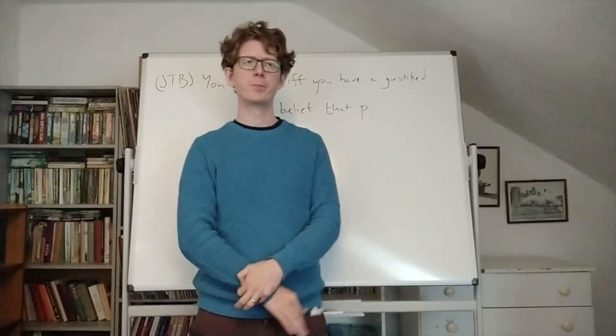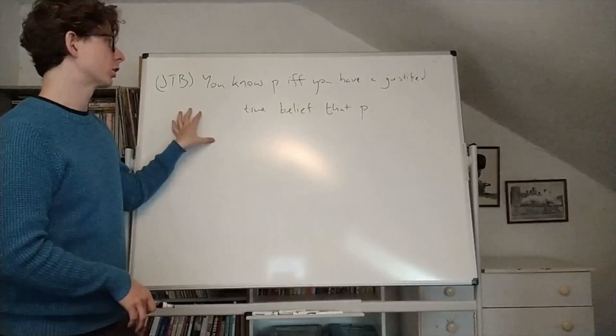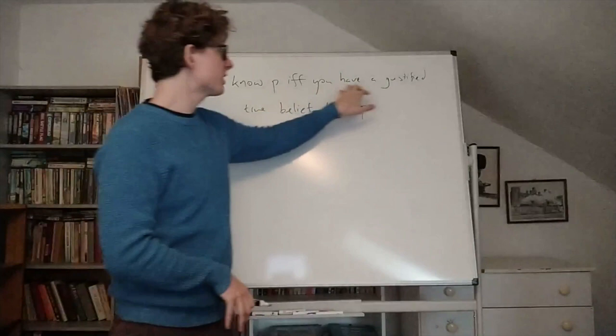And for a long time, it actually seemed like this was a very easy project. So a very old view of knowledge is this justified true belief theory that we saw in one of the earlier components. And the justified true belief theory says that you know P just in case you have a justified true belief that P.